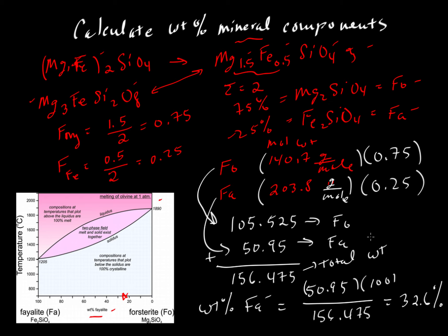If we've done this calculation correctly, there's only two components, so the amount of forsterite by weight percent should be 100 minus this. It should come out something close to 67.4 weight percent.